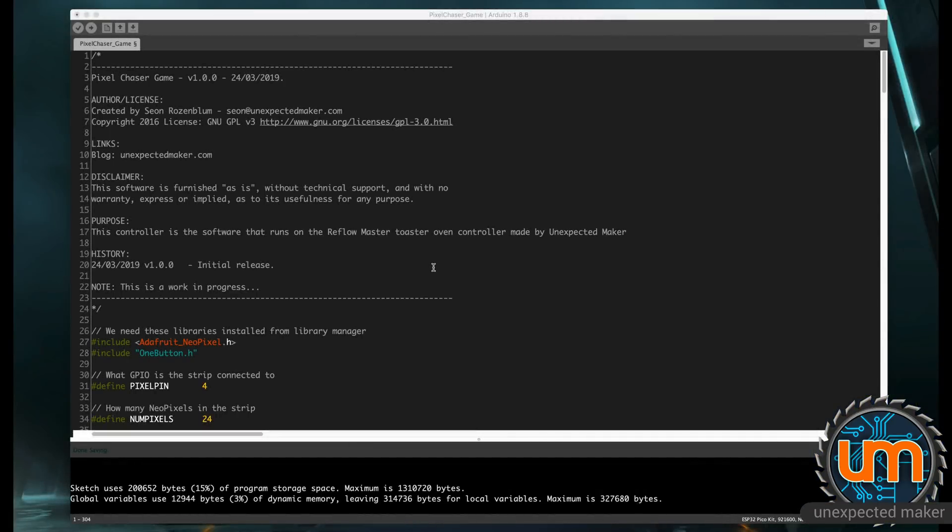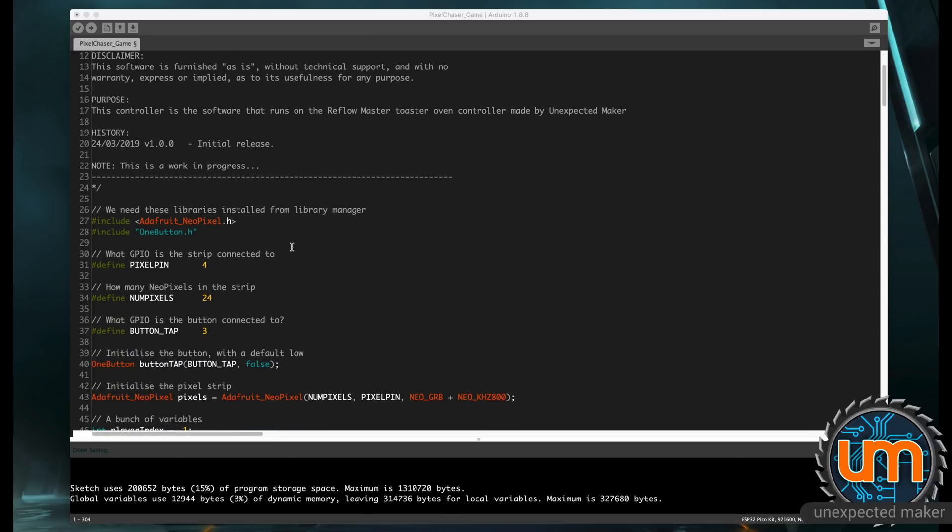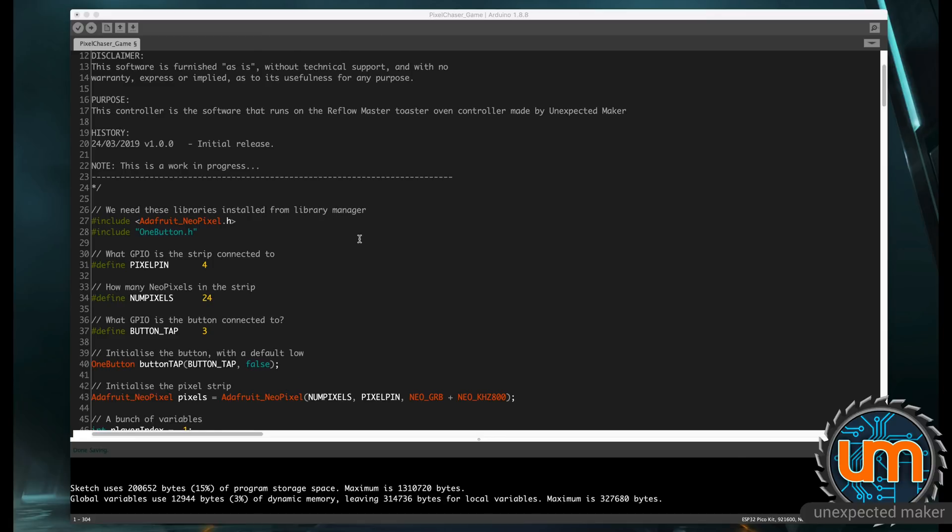Okay. I'm not going to do a complete deep dive on the code because looking at code in video is pretty boring. But I will be releasing a Hackster IO project for the Pixel Chaser game and I'll include the code inside there. The project should be out hopefully on the same day that I release this video. The code itself is using the Adafruit NeoPixel library and the OneButton library. Both of those are available in Library Manager.